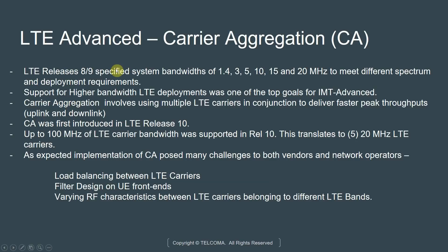LTE Releases 8 and 9 specified system bandwidths of 1.4, 3, 5, 10, 15, and 20 MHz to meet different spectrum and deployment requirements. However, to support higher bandwidth LTE deployments, which was one of the top goals of IMT Advanced, we had to use some technique to combine multiple chunks of spectrum to deliver throughputs of about 1 gigabit per second or 300 megabits per second.